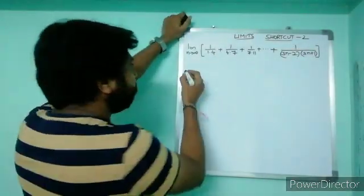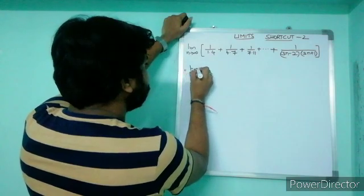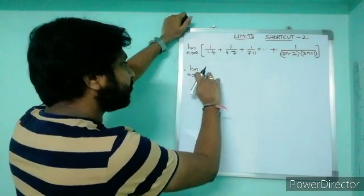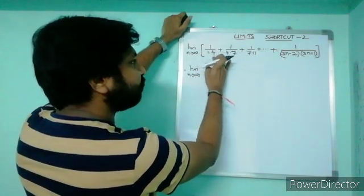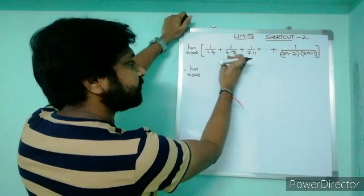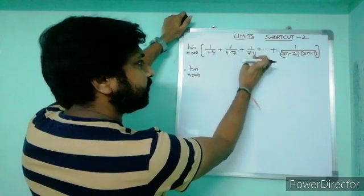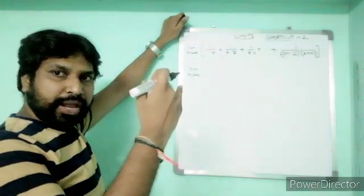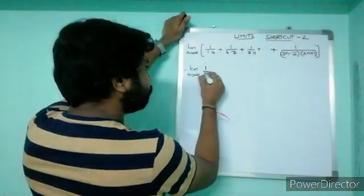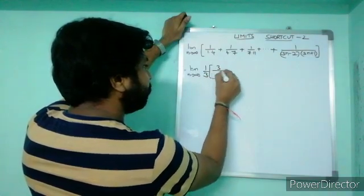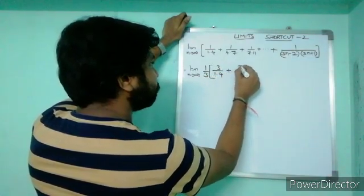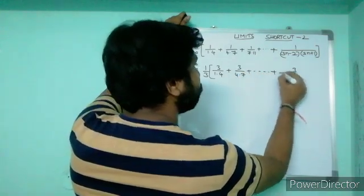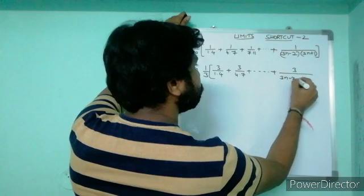So now this problem we are going to solve. Let us look at the difference amount — the difference value: 1 to 4 is 3, 4 to 7 is 3, everywhere the difference is 3. Just multiply and divide by that difference value. So we get 1/3 times [3/(1×4) + 3/(4×7) + ... + 3/((3n−2)(3n+1))].